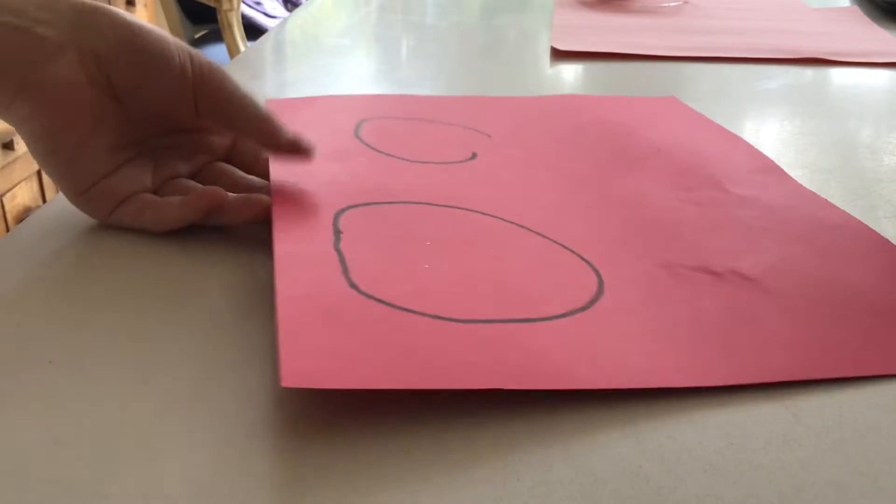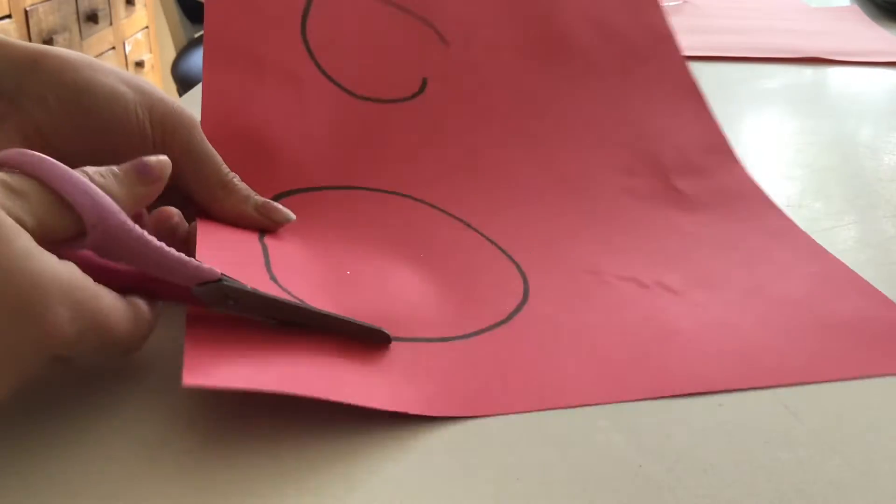First, cut out a shape with cardboard. You can make a circle, a heart, a triangle, or a square.